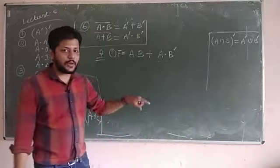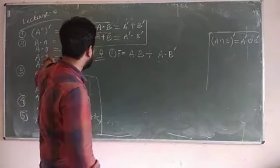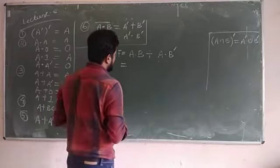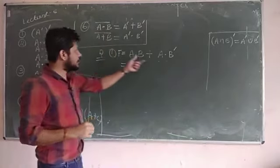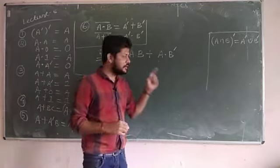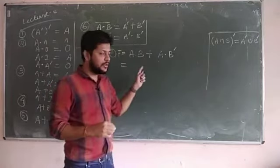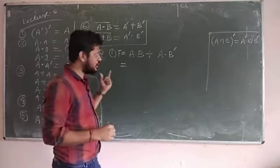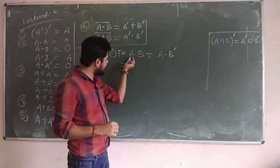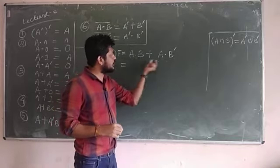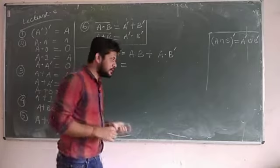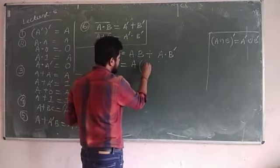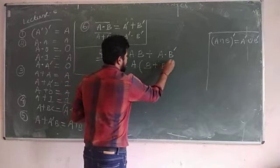Now we will apply the Boolean algebra rules to simplify this expression. First, check if the complement rule applies — no such expression is present. Then, we observe that A is common in both terms: A AND B, and A AND B complement. So take A as common, leaving B OR B complement.